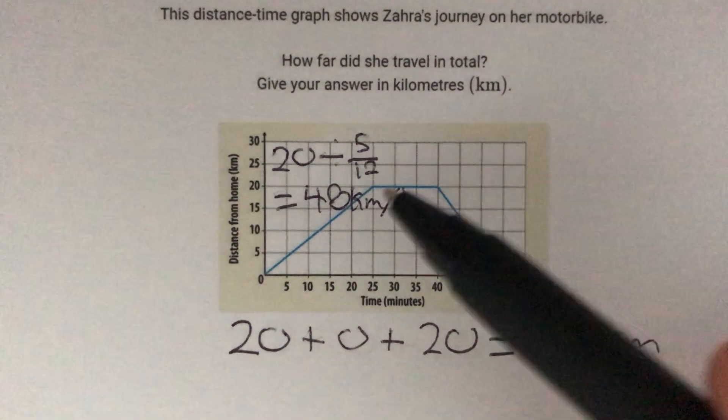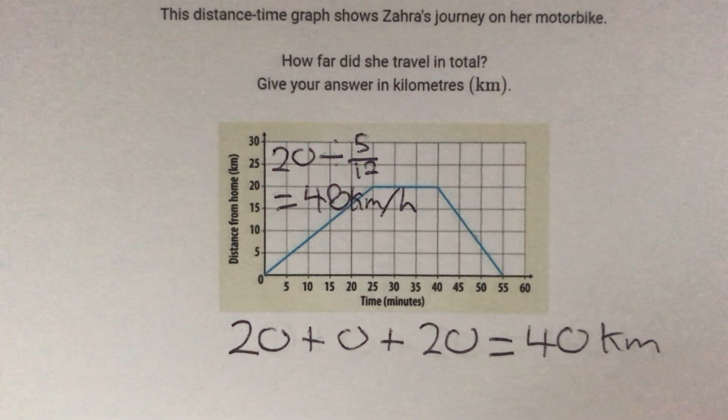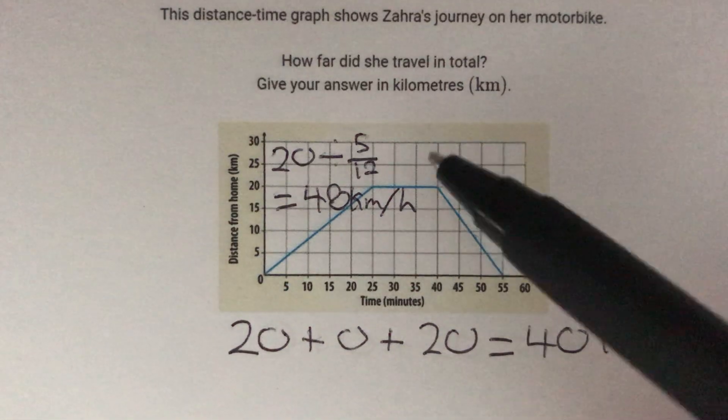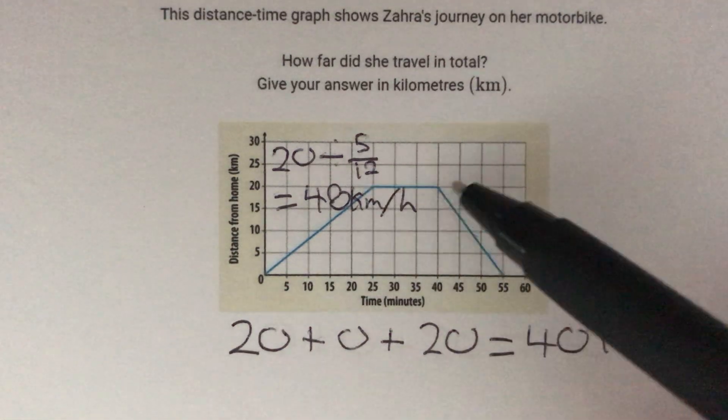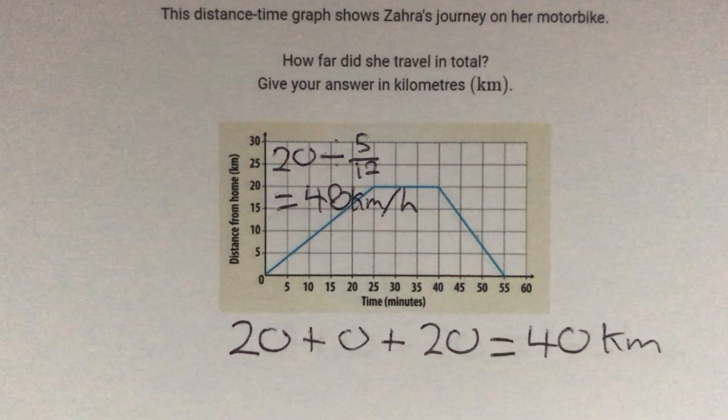In the second part, she's not traveling anywhere — she's stationary — so this part is just going to be 0 kilometers per hour.